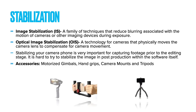Stabilization. Image stabilization, or IS, is a family of techniques that reduce blurring associated with the motion of cameras or other imaging devices during exposure. Optical image stabilization, or OIS, is a technology for cameras that physically moves the camera lens to compensate for camera movement. Stabilizing your camera phone is very important for capturing footage prior to the editing stage. It is hard to try to stabilize the image in post-production within the software itself. Some accessories you can purchase are motorized gimbals, hand grips, camera mounts, and tripods.